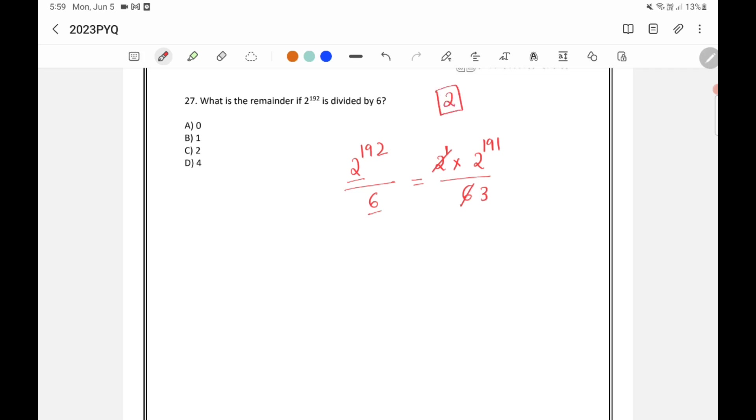So you need to remember this one because in remainder theorem we need to take whatever we have cancelled at the last. So this is 2 raised to 191 divided by 3. So we need to find out what is the remainder when 2 raised to 191 is divided by 3.